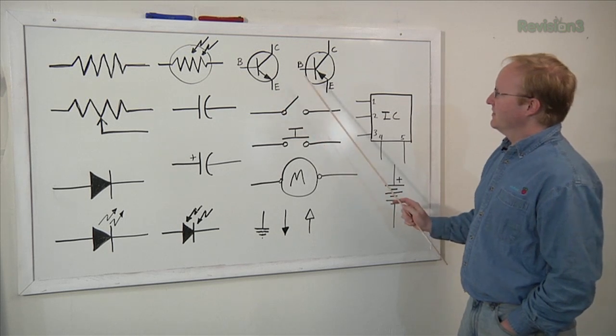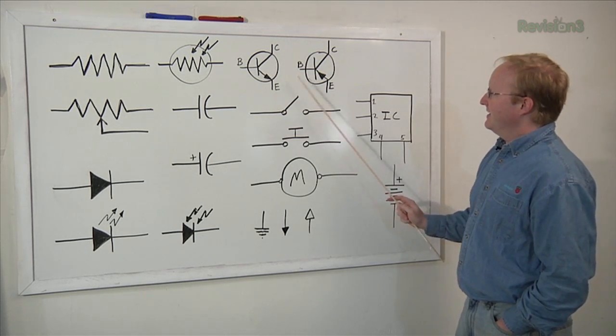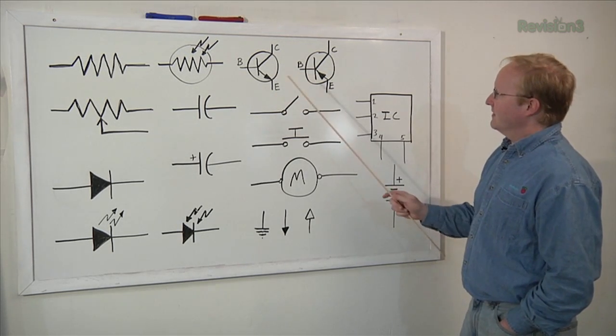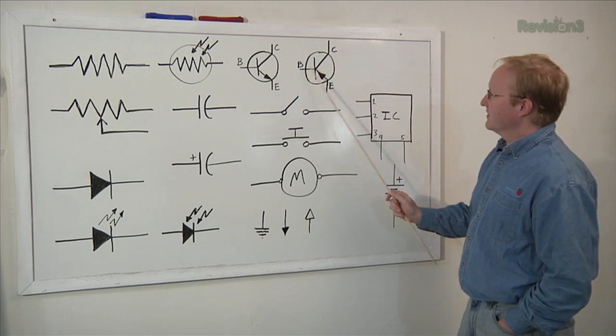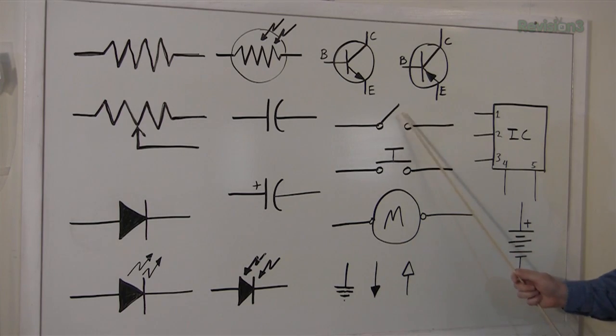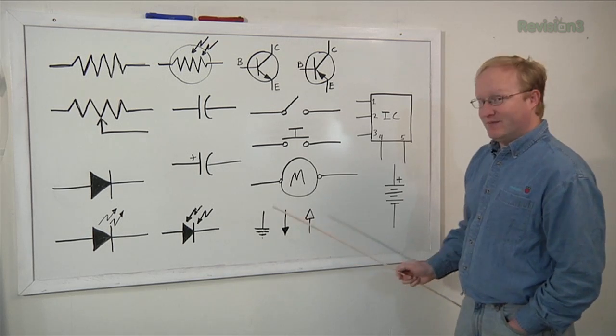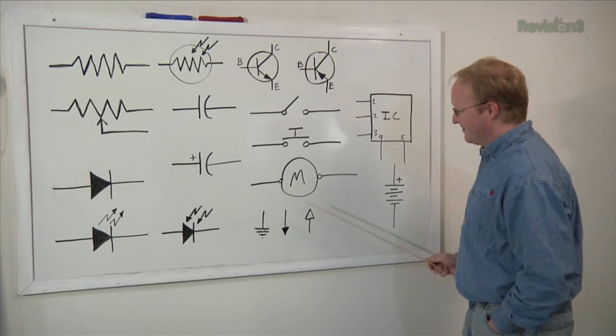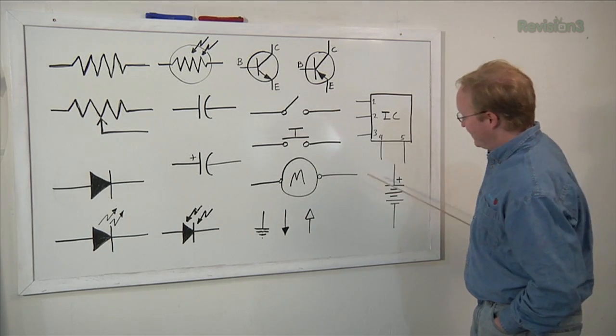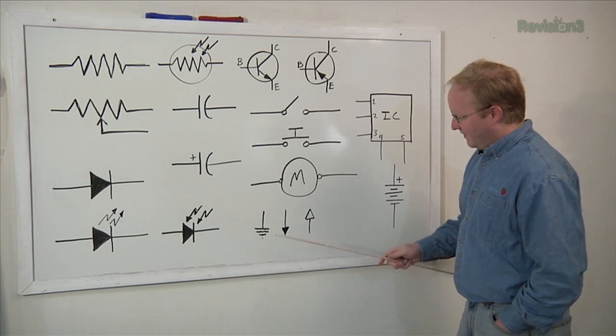Up here, we have our two basic transistors, NPN, PNP. They look very similar except for the arrows going in a different direction. Here's a switch. Here's a push button. M is for motor. So here's the two sides of the motor. So typically, you see an H bridge over here.